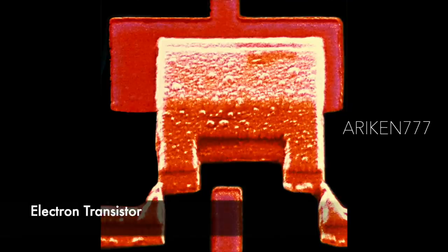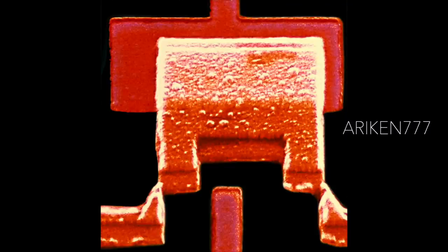A single electron transistor. Like the larger transistors it is designed to replace, it has three parts: positive and negative terminals in the lower left and right, with a gate at center situated in the few nanometers between them. Altering the current on the gate alters the state of the transistor from on to off. In a normal transistor, this requires thousands of electrons worth of charge, but this device can be activated by a single electron. This means more transistors can fit on a silicon chip, making it faster, more powerful, and more efficient.